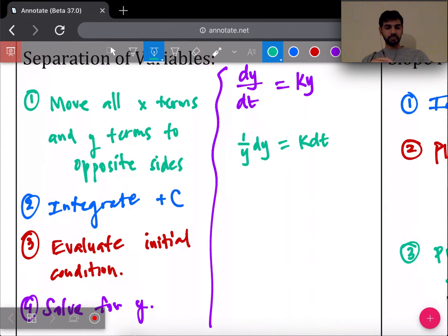The next thing we want to do once we've separated those variables is integrate both sides. When I integrate, we don't want to forget about that constant plus C.